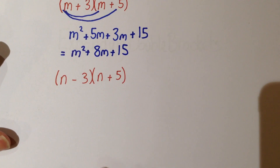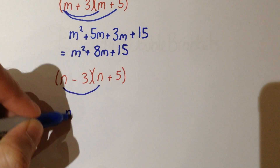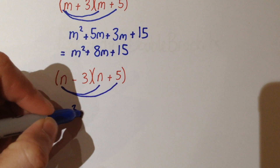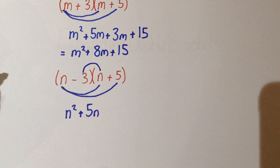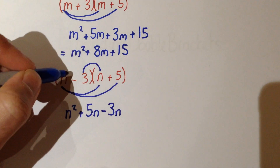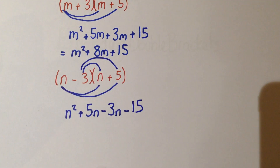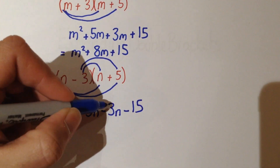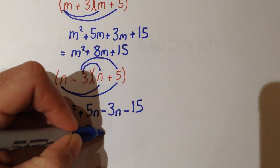For the second question we do the same. We've got n times n giving us n squared, and then n multiplied by positive 5 gives us plus 5n. Here we've got negative 3 times n giving us minus 3n, and negative 3 times positive 5 giving us minus 15. Collecting like terms together we get n squared, and positive 5 take away 3 leaves us plus 2n, take away 15.